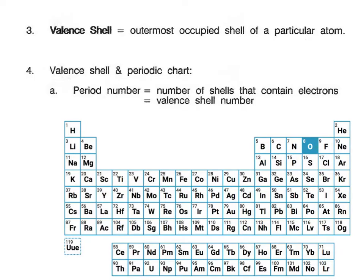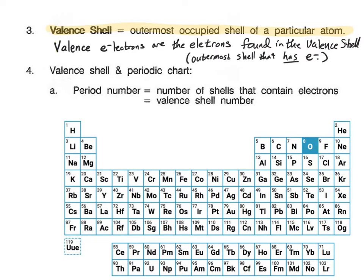When we have electrons in a shell, we call that an occupied shell. And the one with the last shell that has electrons in it, we call the valence shell. The electrons that are in that valence shell are called valence electrons. So valence electrons are the electrons found in the outermost occupied shell of any atom.